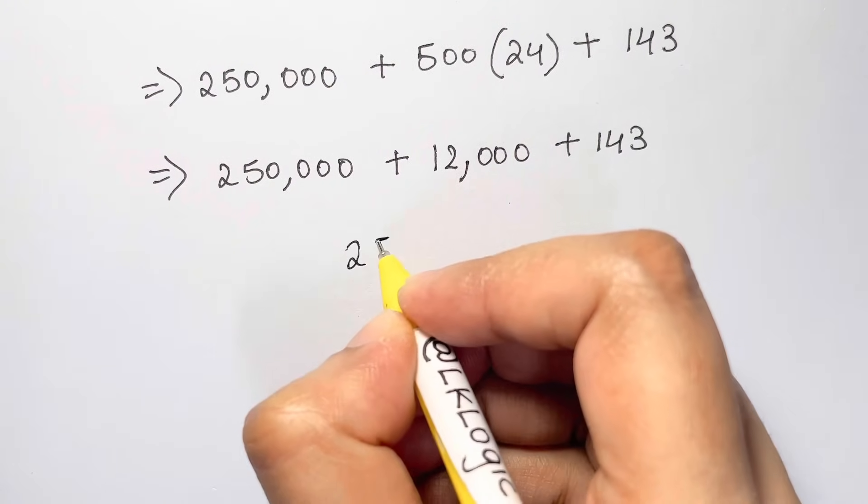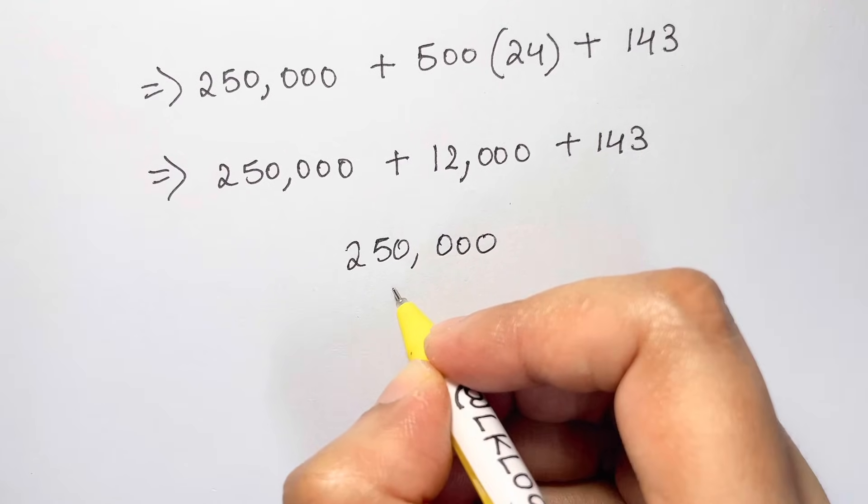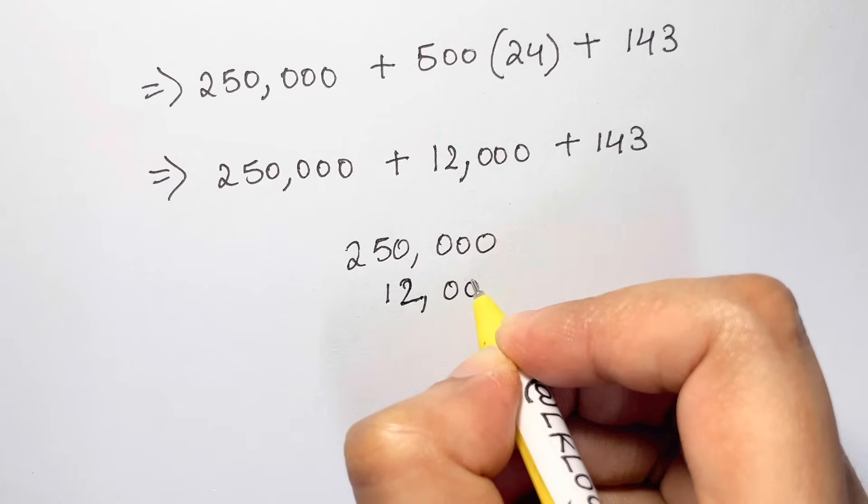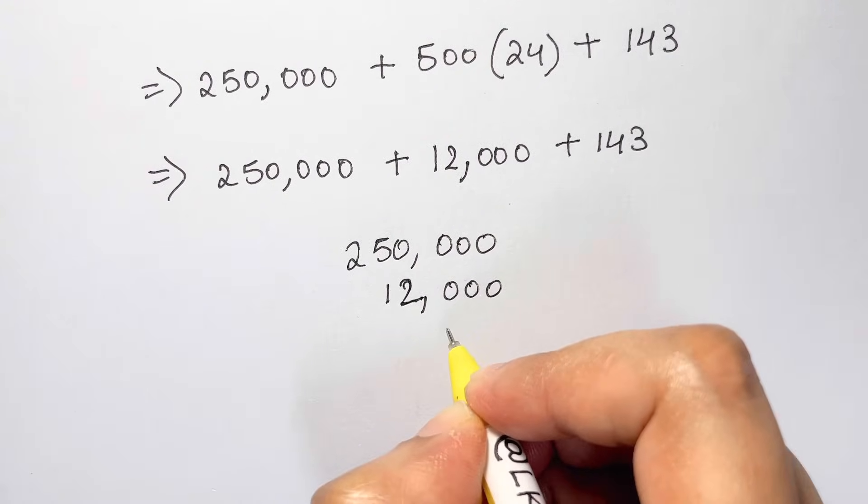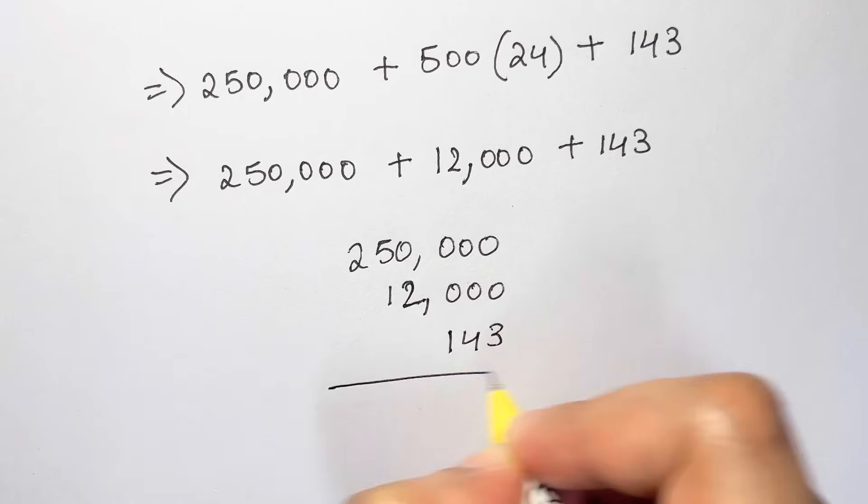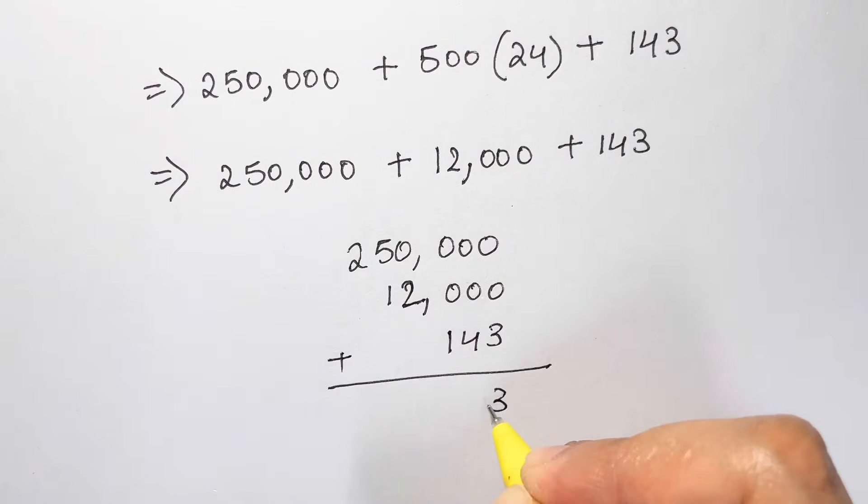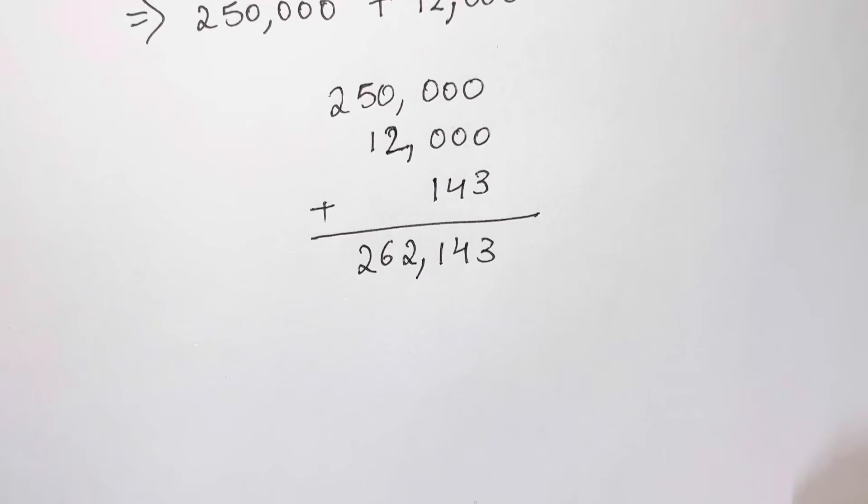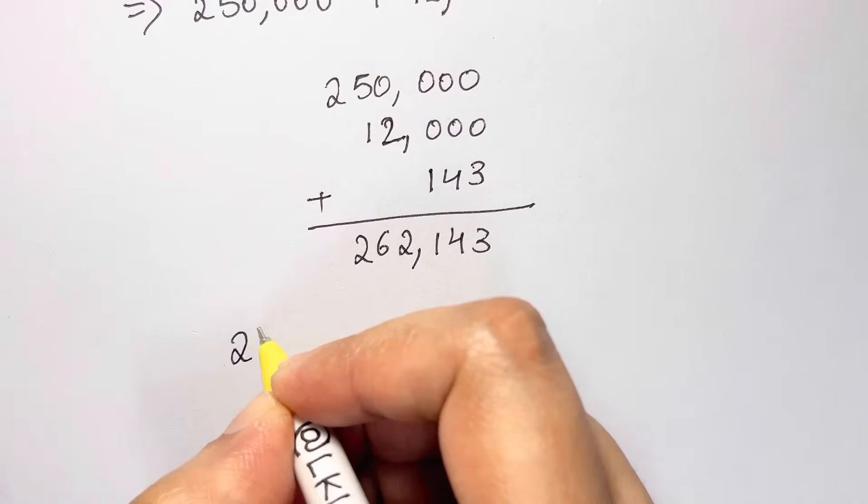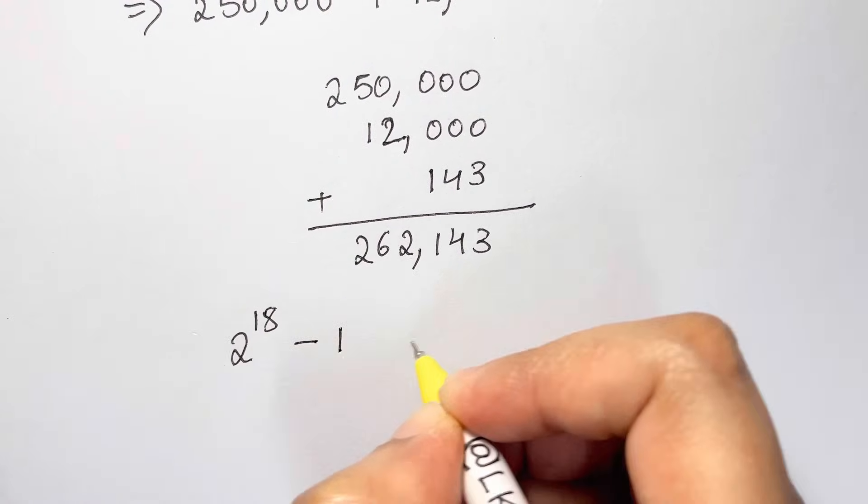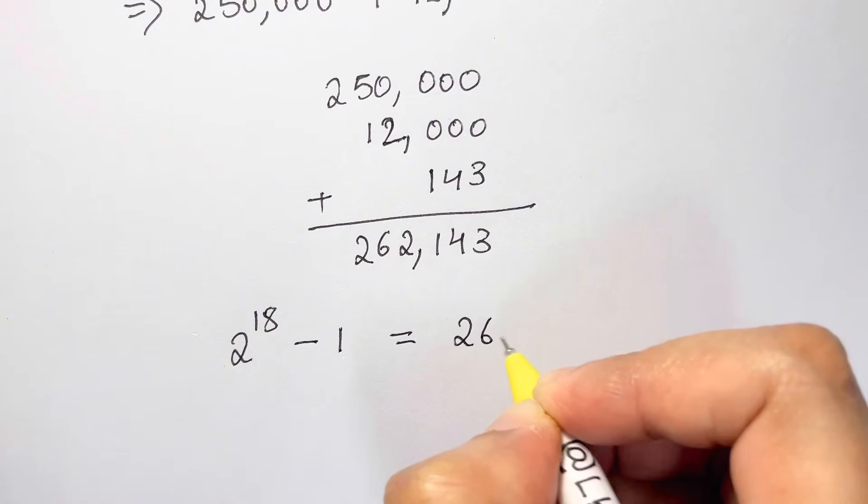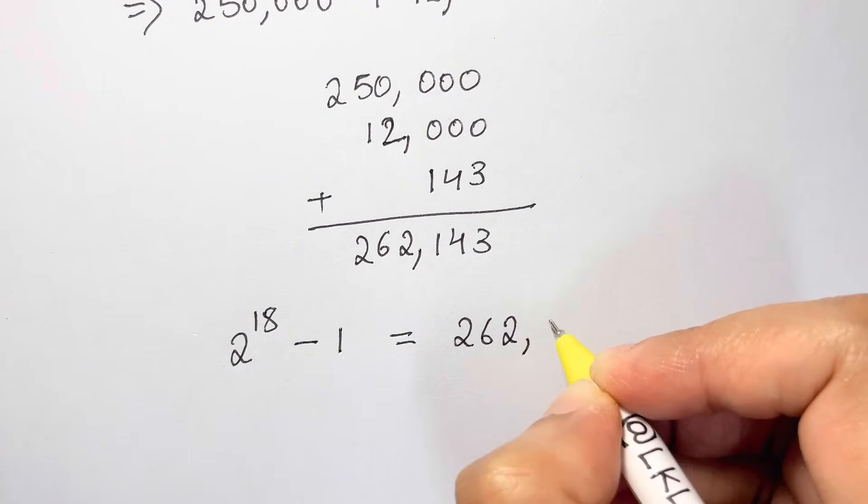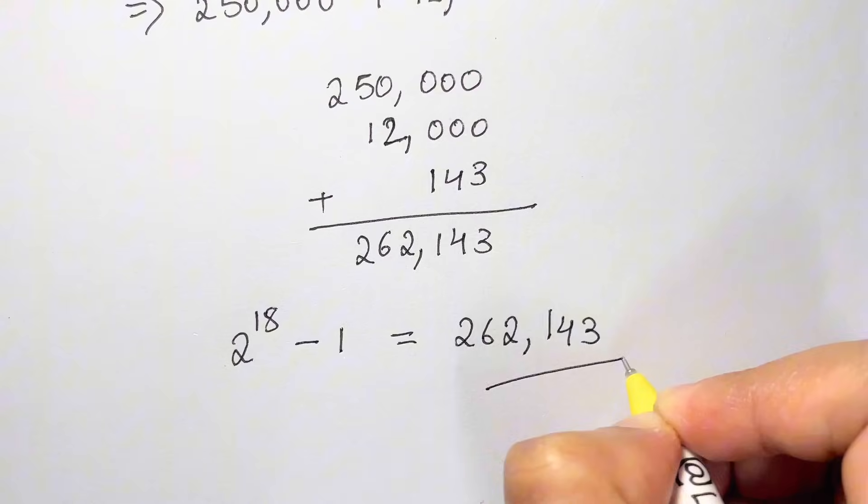Now let's just add them up together. So we have 250,000 plus 12,000 plus 143. So when you add them up, you get 3, 4, 1, 2, 6, 2. So you have the answer of 2 to the power of 18 minus 1 is equal to 262,143.